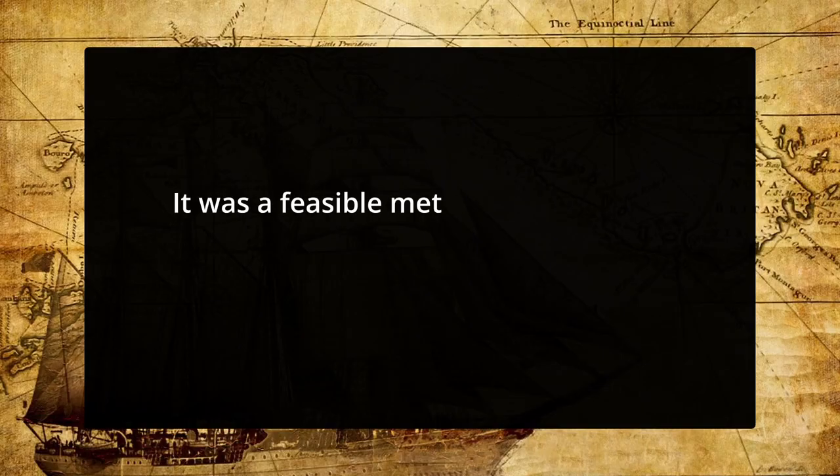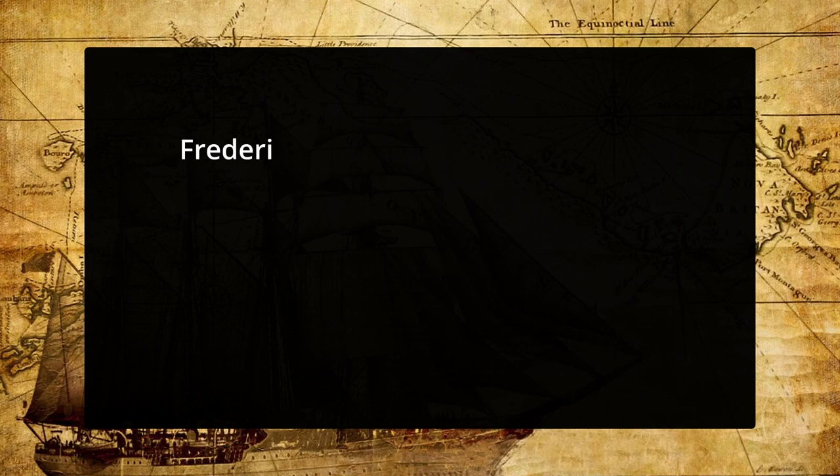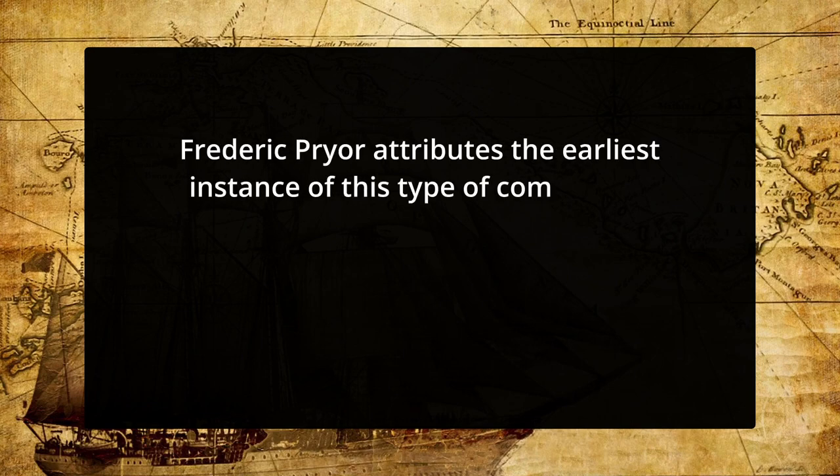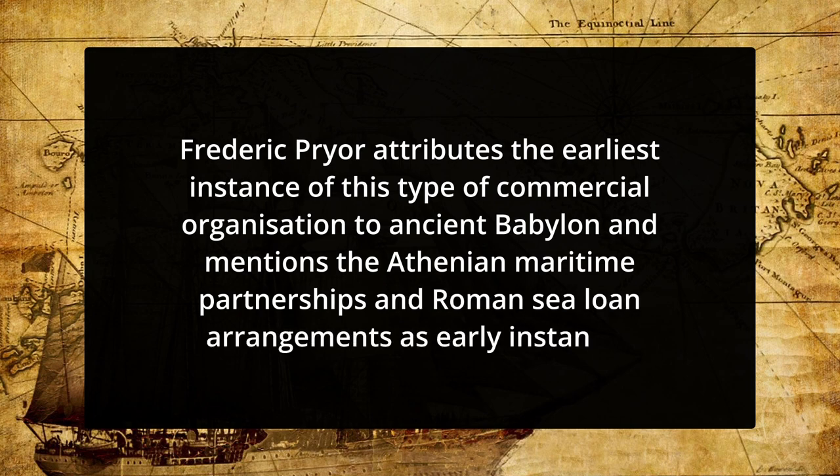Commonly known as a Commenda partnership, the arrangement between a merchant, ship owner, and investor was the most typical form of collaboration in the literary traditions of ancient Greece. It was a contract in which the parties contributed diverse skills and abilities to a commercial endeavour: one merchant invested capital, another provided expertise and labour, the third partner invested transportation means, and so on. It was a feasible method for financing business in a low-capital economy and avoiding wage labour. Frederick Prior attributes the earliest instance of this type of commercial organisation to ancient Babylon, and also mentions the Athenian maritime partnerships and Roman sea loan arrangements as early instances.